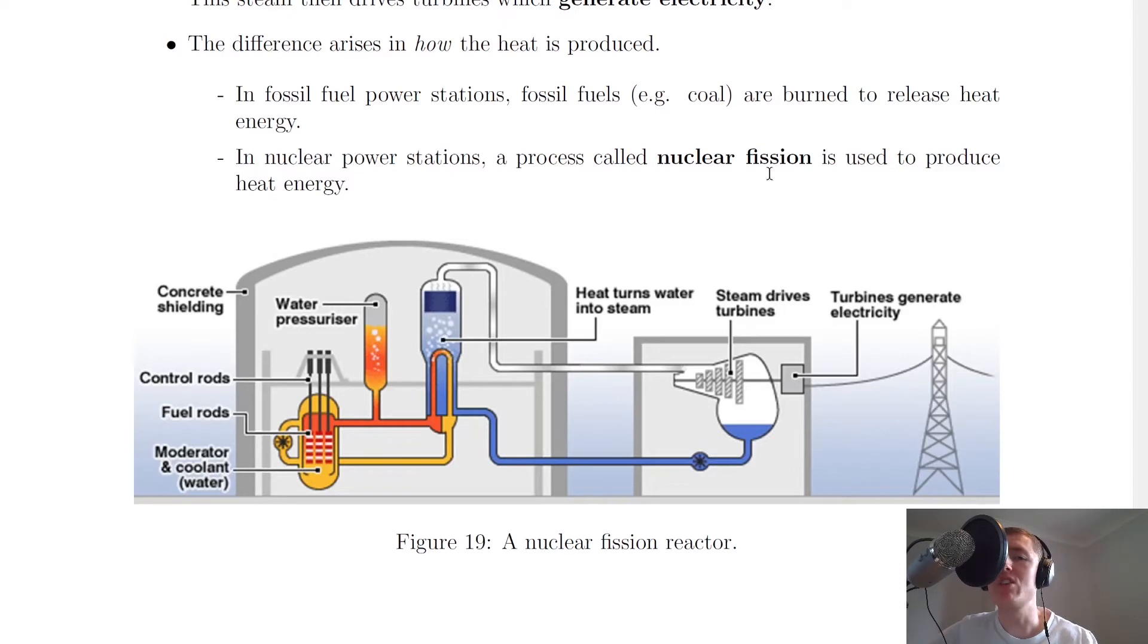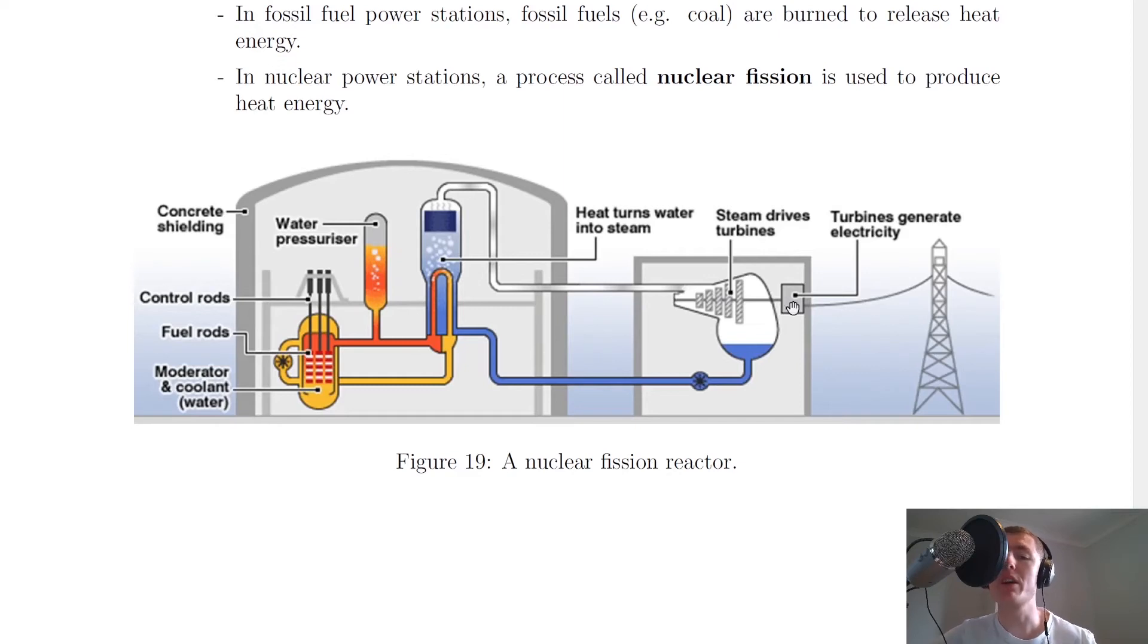But in nuclear power stations, a process called nuclear fission is used to produce heat energy instead. Here's a picture of the inner workings of a nuclear fission reactor. Down here you have the moderator and coolant, and you have fuel rods and control rods. The fuel rods you can imagine as thin poles which have little pellets inside them, usually uranium pellets, and that is your fuel for the nuclear fission reaction.